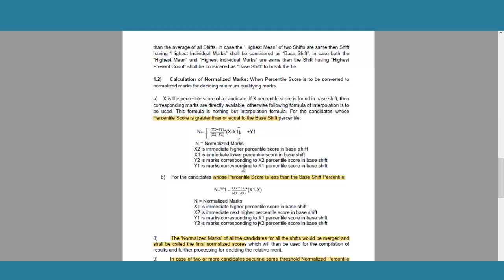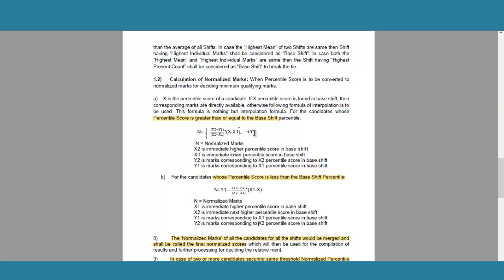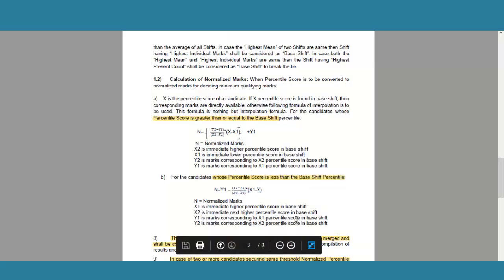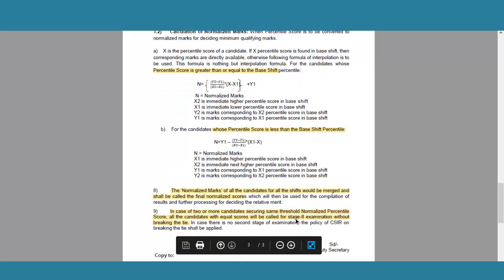If the score is less than the base shift percentile, it will differ. It is just an interpolation method — y1 (the original marks) plus whatever is interpolated. This is nothing but interpolation. Similarly, if you have scored less than y1 in the base shift, it is y1 minus the interpolated marks — again, just interpolation. These marks will finally be merged to calculate the final normalized score, which will be obtained after the calculation of normalized marks.